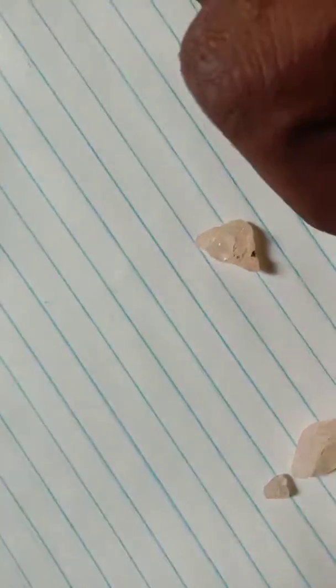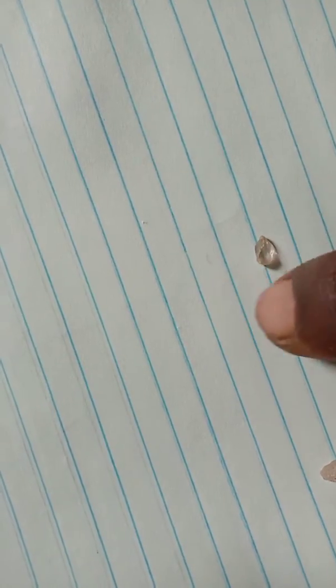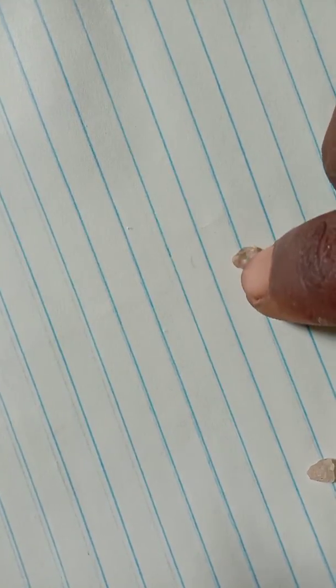You get the exact line. But when you keep a diamond, you won't get the line exactly. The line is distorted or not seen properly. See, the line is shown a little broader.